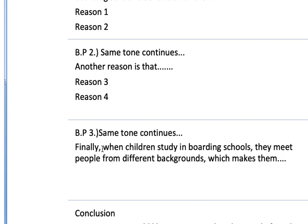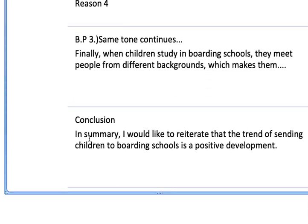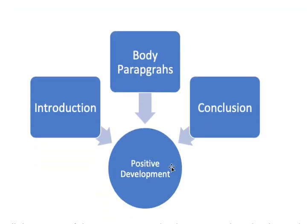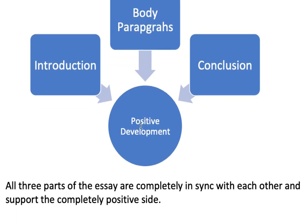For example: 'When children study in boarding schools they meet people from different backgrounds which makes them...' and you complete that point. Then in the conclusion — one sentence is generally sufficient, sometimes two — you write: 'In summary, I would like to reiterate that the trend of sending children to boarding schools is a positive development.' You can see that the introduction, conclusion, and all body paragraphs all point towards boarding schools being positive — all parts of the essay are completely in sync and support the completely positive side.